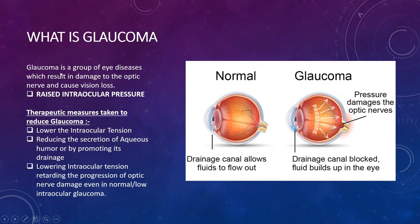What is glaucoma? Glaucoma is a group of eye diseases which result in damage to the optic nerve and cause vision loss. It is basically a disease occurring due to increased intraocular pressure, resulting in the damage of the optic nerve and vision loss. The therapeutic measures include lowering the intraocular pressure by reducing the secretion of aqueous humor or by promoting its drainage.